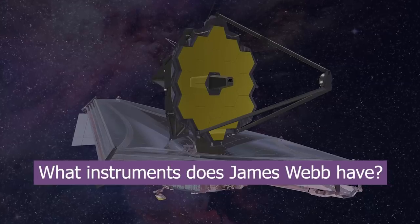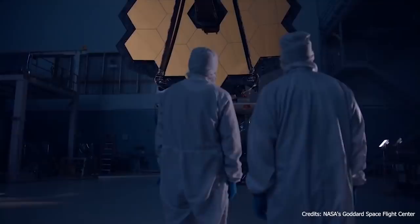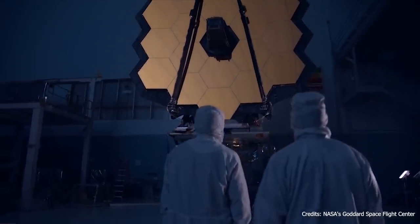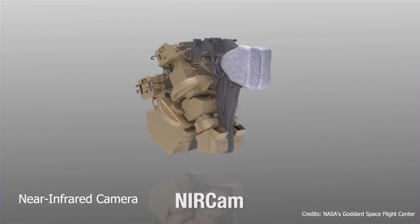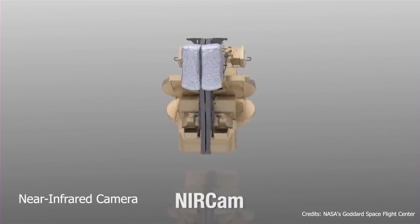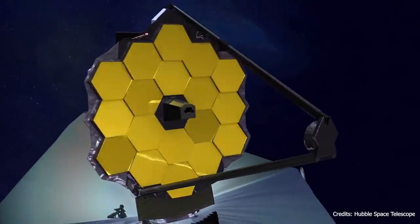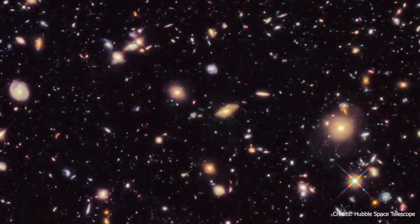What instruments does James Webb have? James Webb carries four instruments. First, there's the near-infrared camera, or NIRCam, which will detect light from the earliest stars and galaxies in the universe.